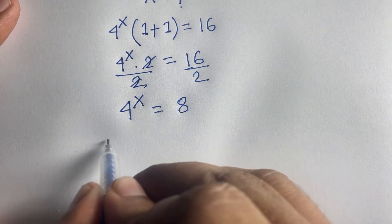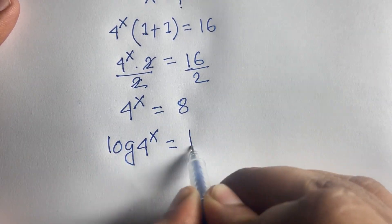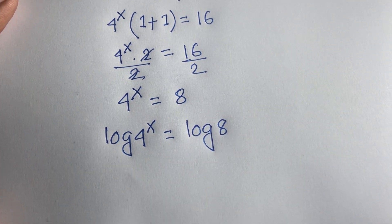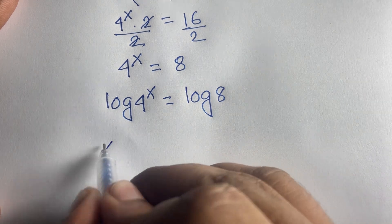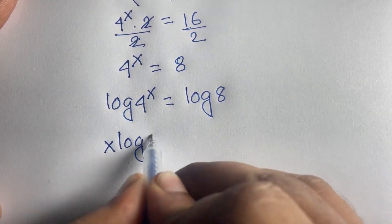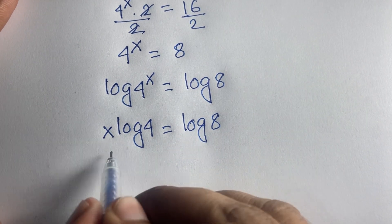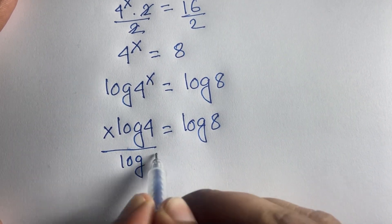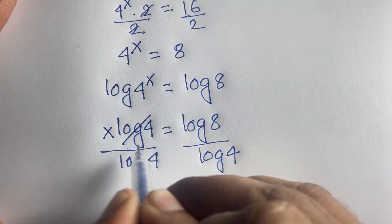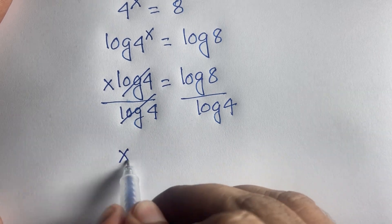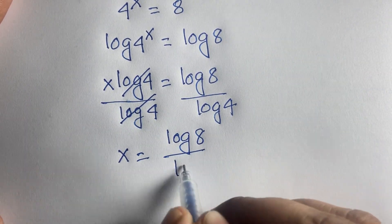Now at this moment, to find the value of x, I apply the natural log to both sides. So log of 4 to the power x is equal to log 8. According to logarithm rules, x moves to the front: x times log 4 equals log 8. Dividing both sides by log 4, we get x equals log 8 divided by log 4.